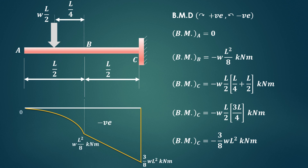Drawing the bending moment diagram: all values are negative. Bending moment at A is 0, at B it is minus WL squared by 8 kNm, and at C it is minus 3WL squared by 8 kNm. For the AB length, where there is a uniformly distributed load, we draw an inverted parabola, and then a straight line for the remaining part BC. This completes the shear force and bending moment diagram for a cantilever beam carrying UDL for half the span from the free end.